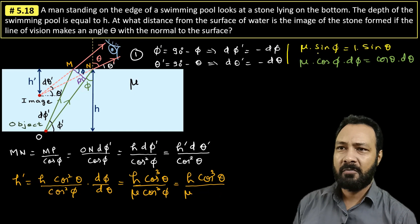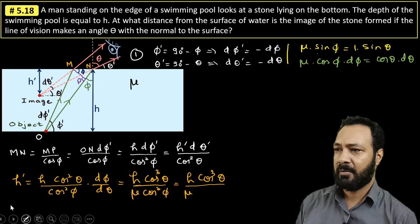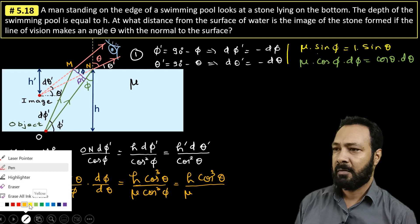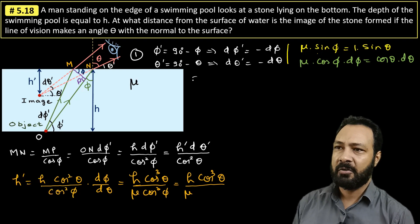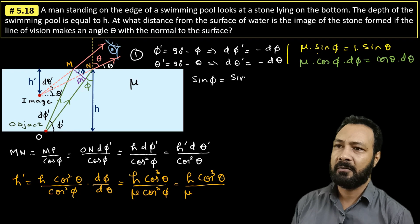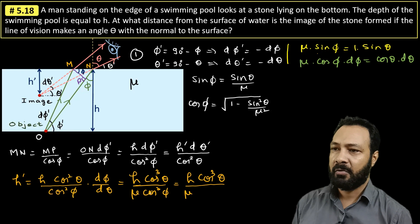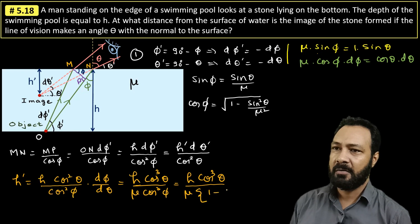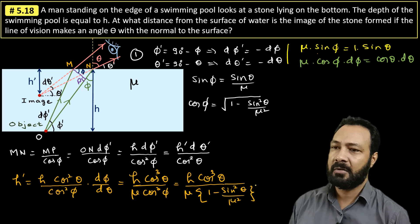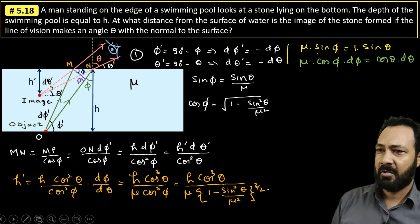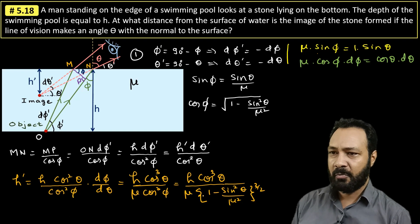Now I will substitute sin(phi) to cos(phi). From Snell's law, sin(phi) = sin(theta) / mu. Therefore cos(phi) = square root of (1 − sin²(phi)) = square root of (1 − sin²(theta)/mu²). Putting this cos(phi) into the expression: h-dash = h · cos³(theta) divided by mu times (1 − sin²(theta)/mu²)^(3/2). Taking LCM with mu²: this gives mu² in numerator. After simplification the final answer is h-dash = h · mu² · cos³(theta) / (mu² − sin²(theta))^(3/2).